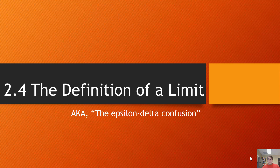And now we get to what my high school calculus teacher affectionately called the epsilon-delta confusion. This video is on the precise definition of a limit, and it relates to James Stewart's sixth edition calculus textbook, chapter 2, section 4. The chapters are renumbered in later editions. But every calculus textbook, except maybe a high school calculus textbook, is going to have a section on the precise definition of a limit.